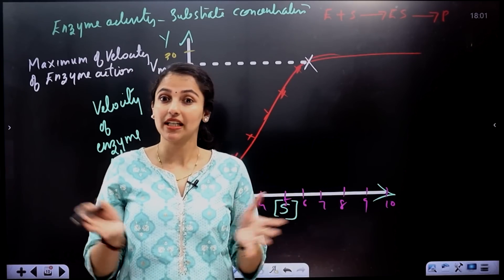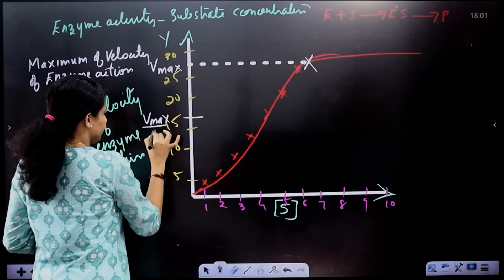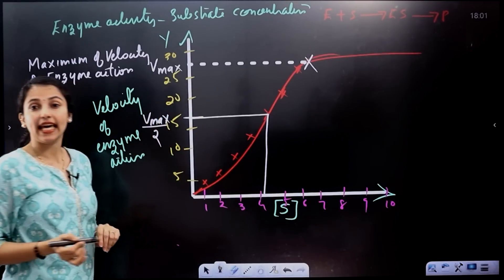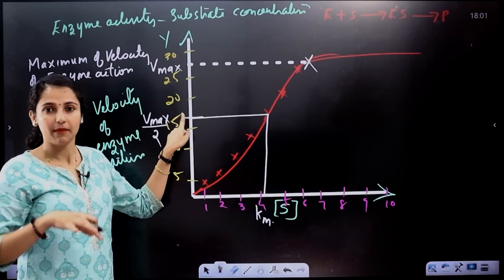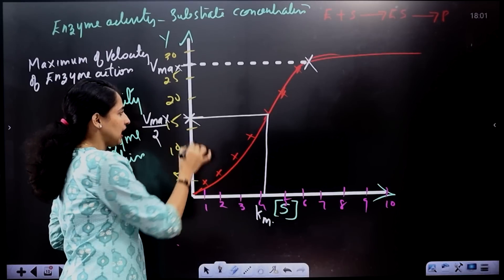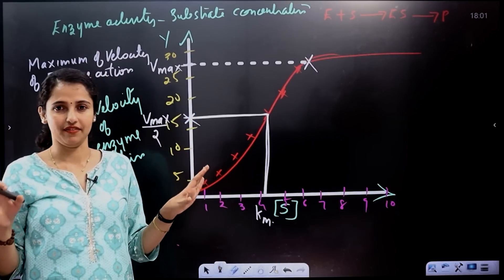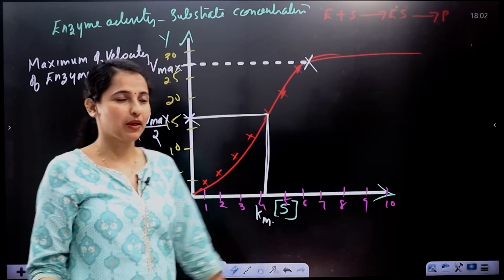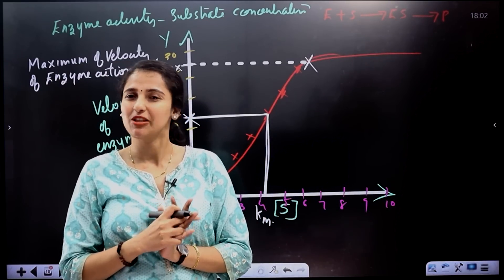If you add more substrate beyond VMAX, there are no free enzymes left to bind with the substrate, so there is no further increase in enzyme activity. Now, at half of VMAX — VMAX by 2 — we mark a specific point. The concentration of substrate at which enzyme activity is half of VMAX is called the KM value.